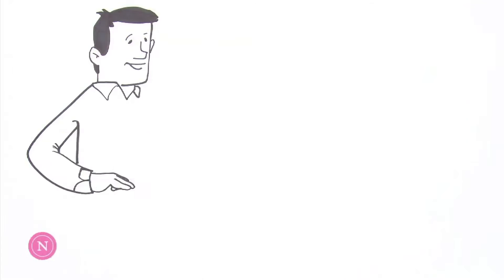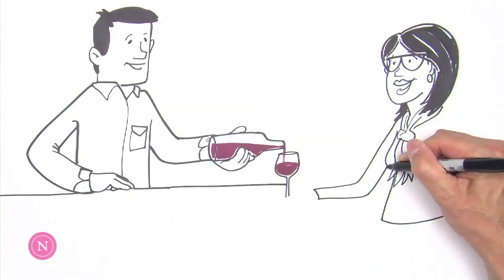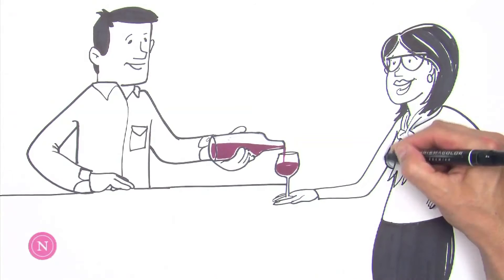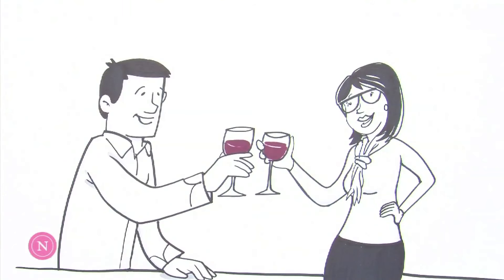By using NomaCork closures, winemakers can consistently manage oxygen exposure, reducing the risk of wine faults, and ensure that when the wine reaches a consumer's glass, every bottle will taste and smell just as they intended it to be.